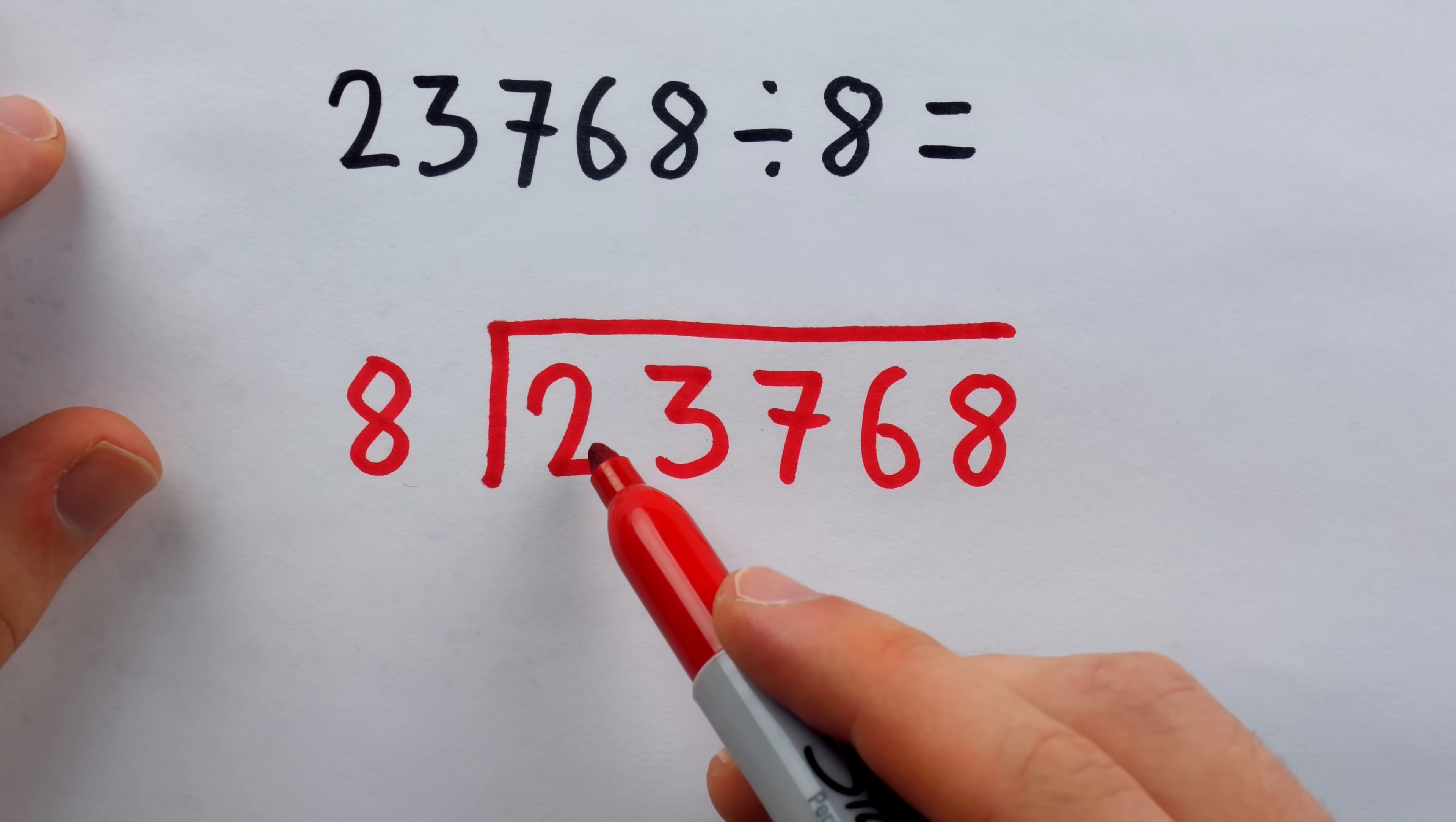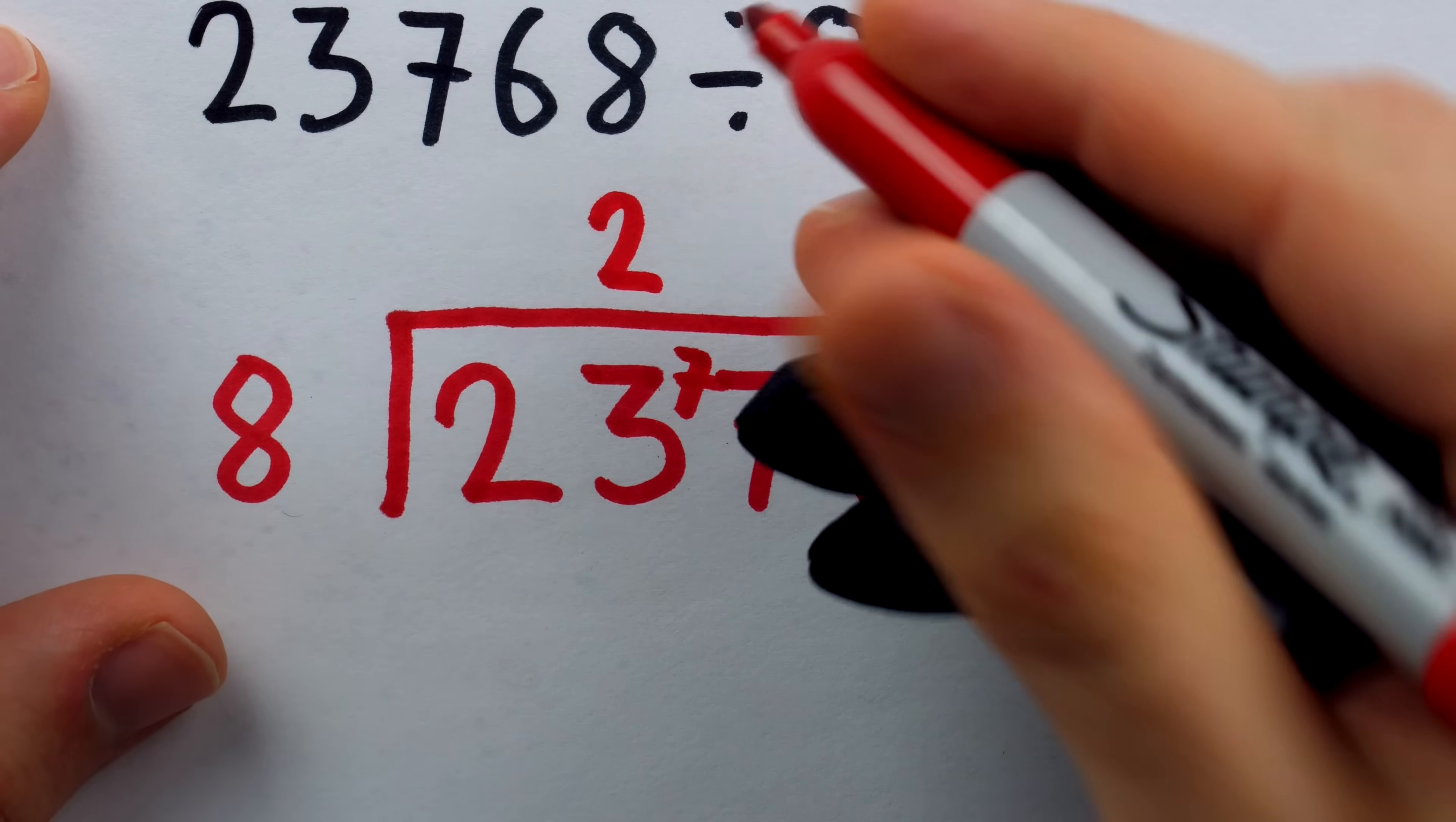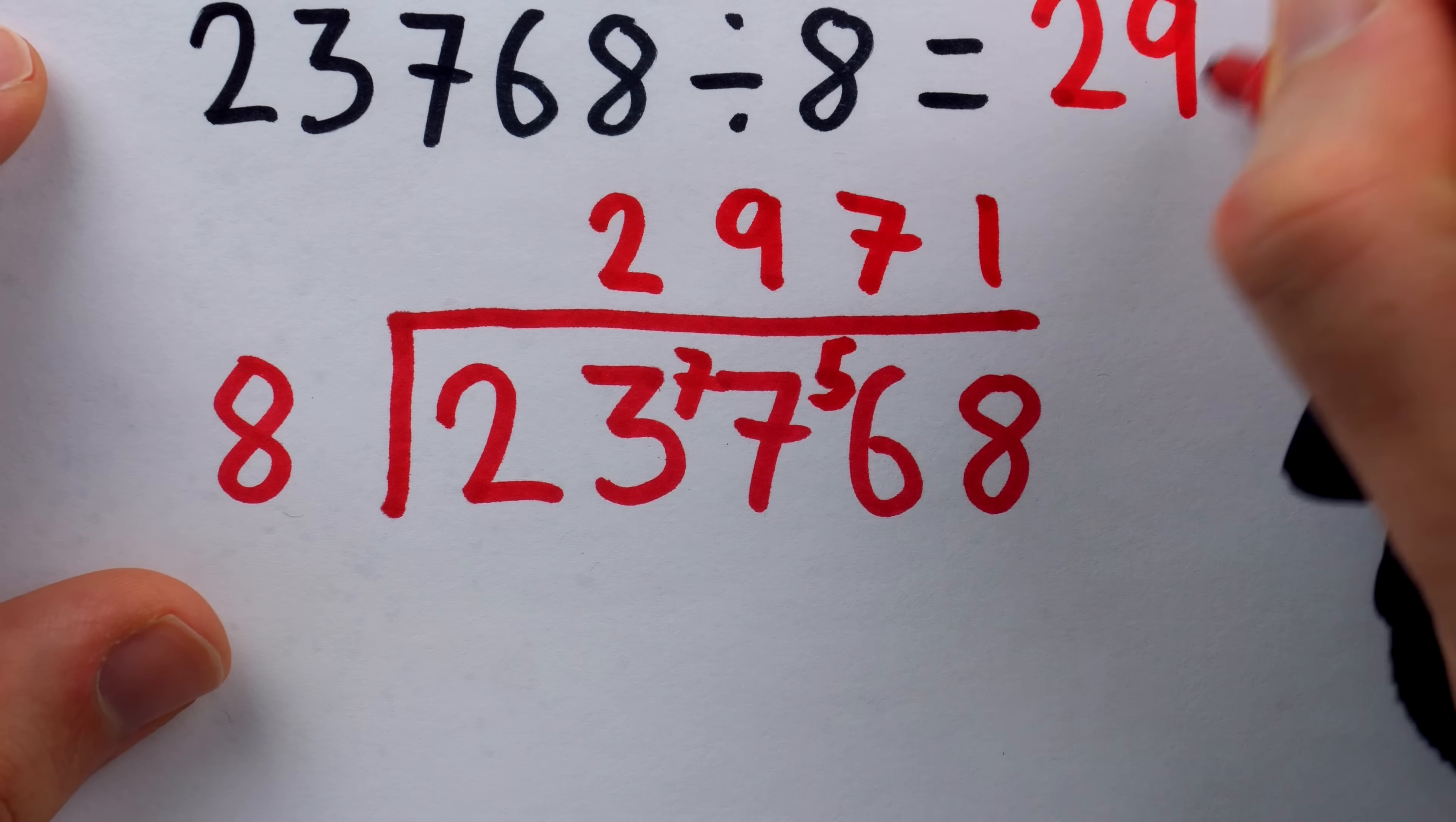So check this out. Does 8 go into 2? No. Does it go into 23? Yes, it goes into 23 twice, so we put a 2 there, with a remainder of 7. So we put a 7 there. Then we're looking at 77. Does 8 go into 77? Yes, it goes into 77 9 times. 8 times 9 is 72. We have a remainder of 5. Put that 5 there. Now we're looking at 56. Does 8 go into 56? Yes, 7 times with a remainder of 0. Does 8 go into 8? Yes, 1 time. There's our answer.